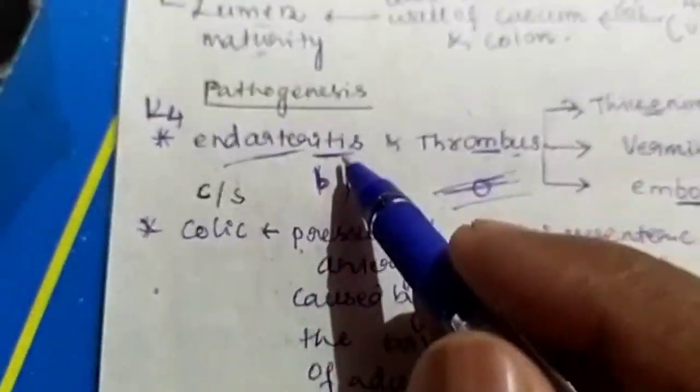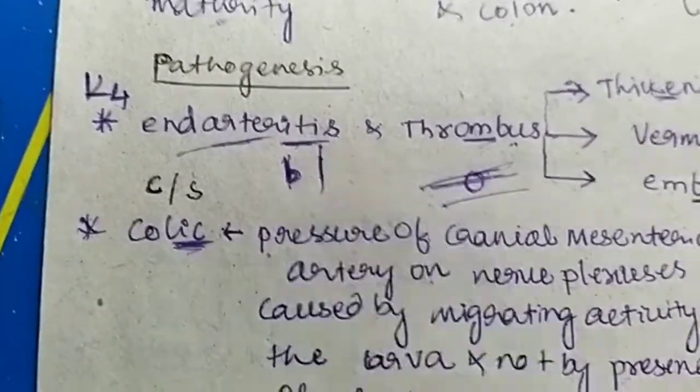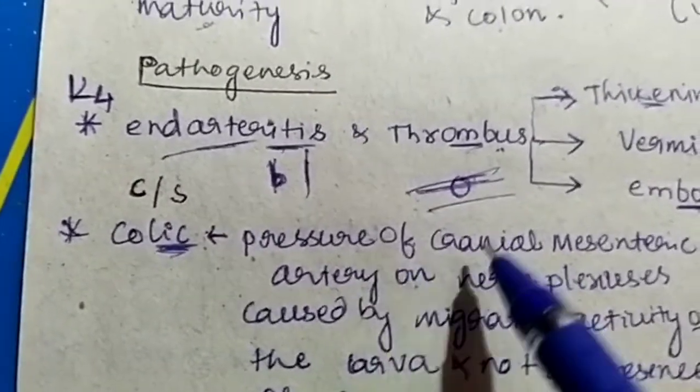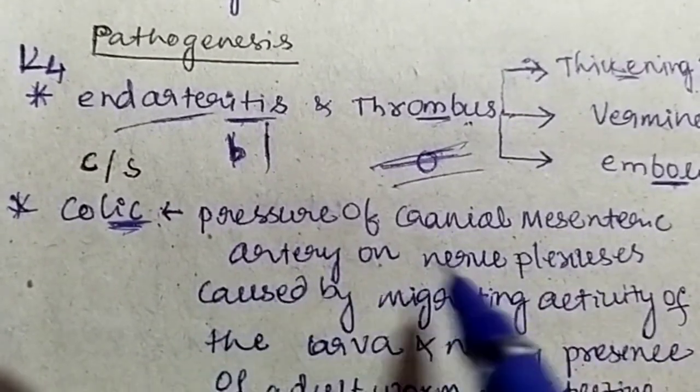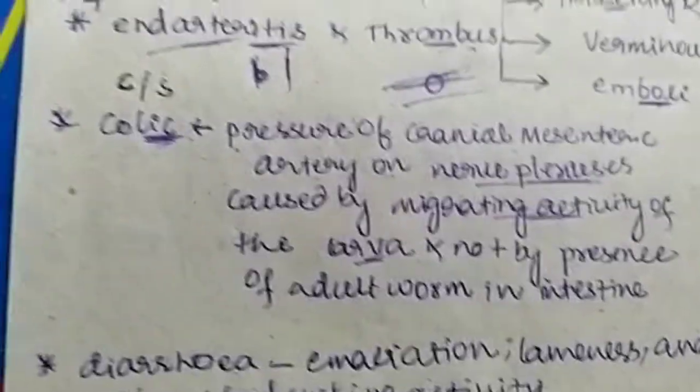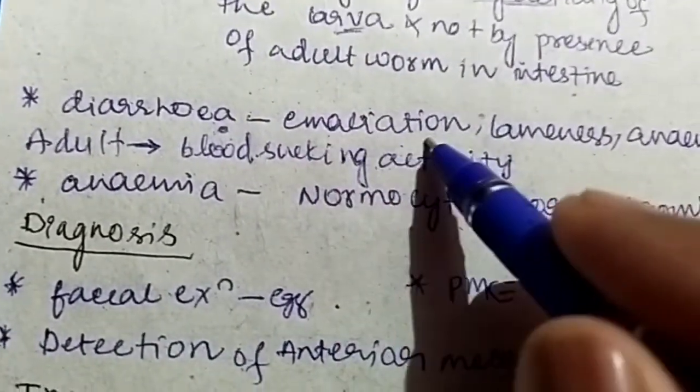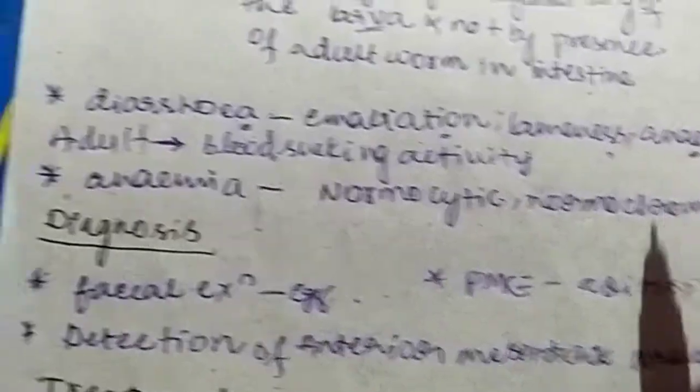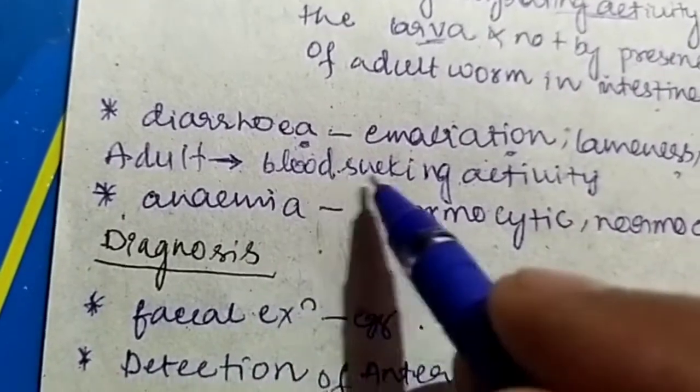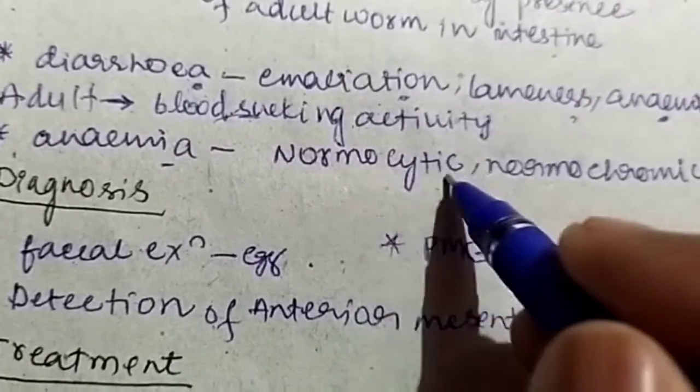The second condition is colic in the horse. Colic is mainly because of the pressure of cranial mesenteric artery on the nerve plexus caused by migrating larvae. In some cases there is diarrhea, which eventually leads to emaciation, lameness, and anemia. Anemia is because the adult has the ability to suck blood. The type of anemia is normocytic and normochromic.